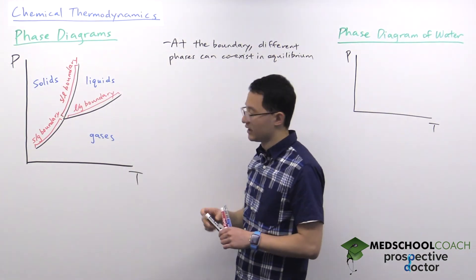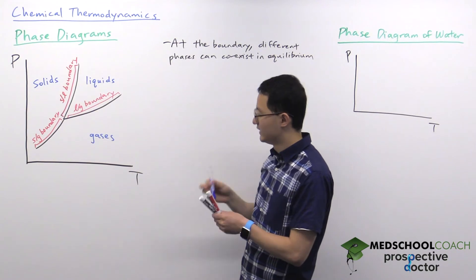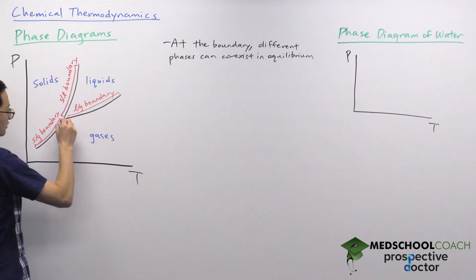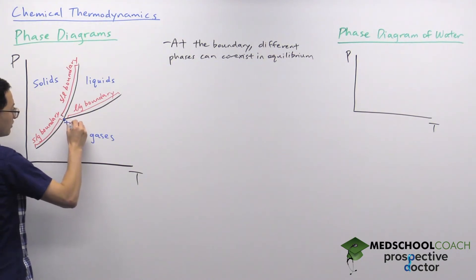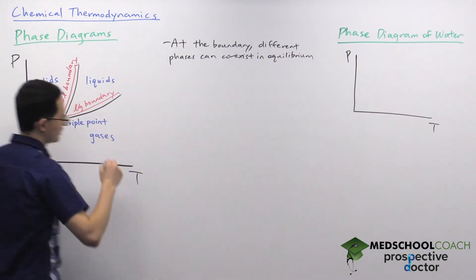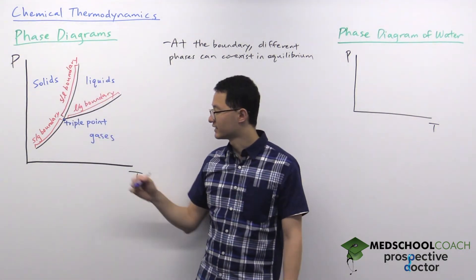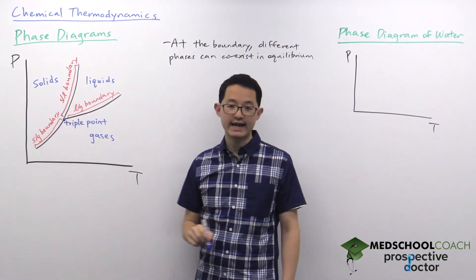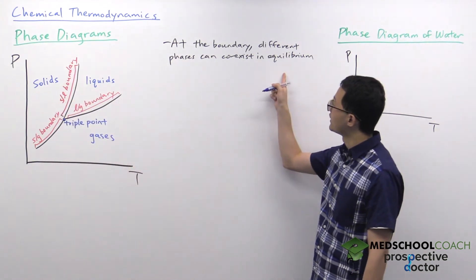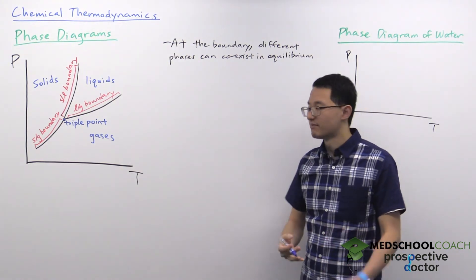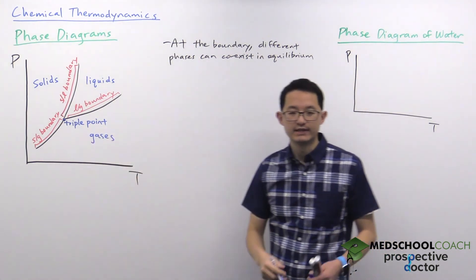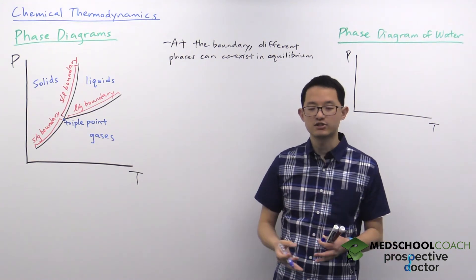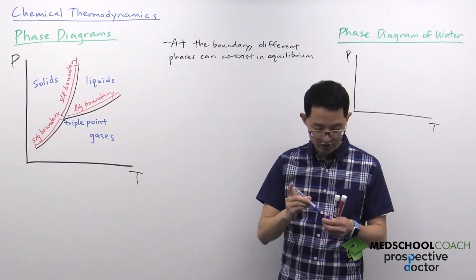Several key points on this graph are also important. Right in the center is what is called the triple point. The triple point is very important because it is the intersection where you have solids, liquids, and gases. Whereas a boundary line is where two phases can coexist, the triple point is the point where you have the correct pressure and temperature such that all three phases are in equilibrium with each other.